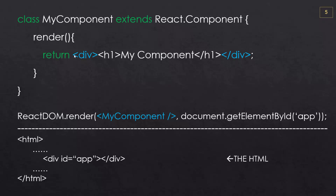It's also important to know that when you return this, it has to be all wrapped in one element. You can have as many elements as you want inside the div, but you can't have another div right under this one and return two of them — it has to be wrapped in one.